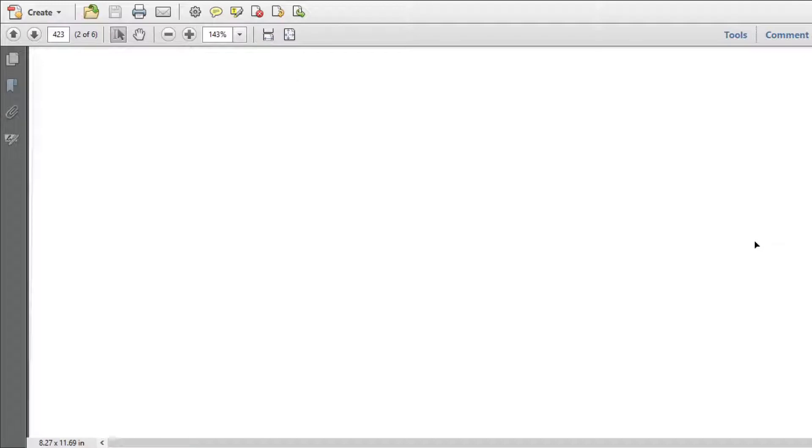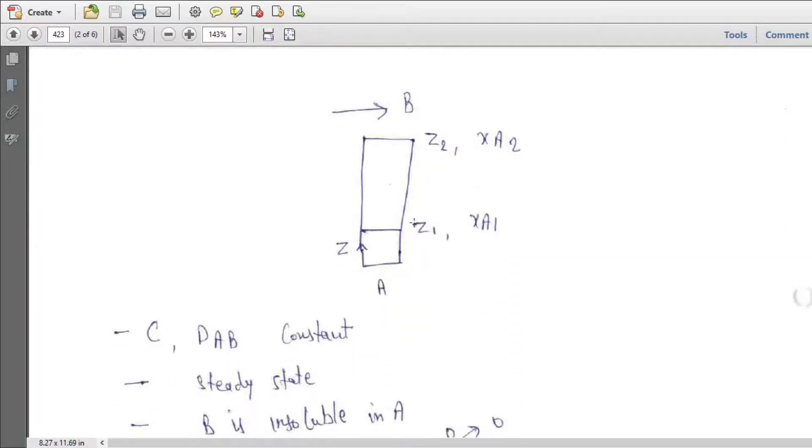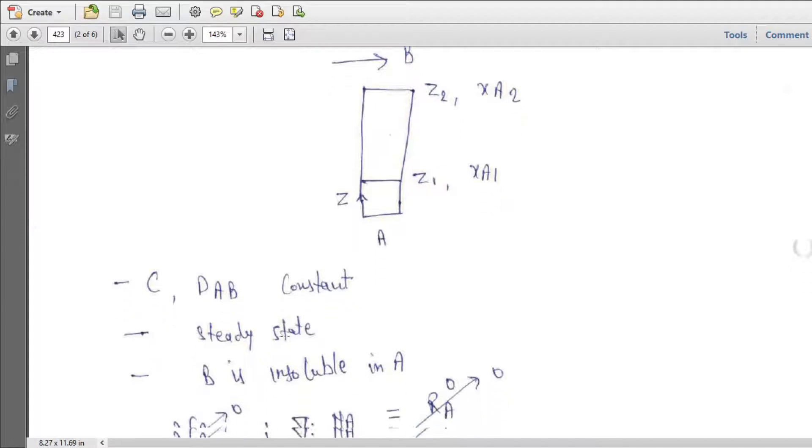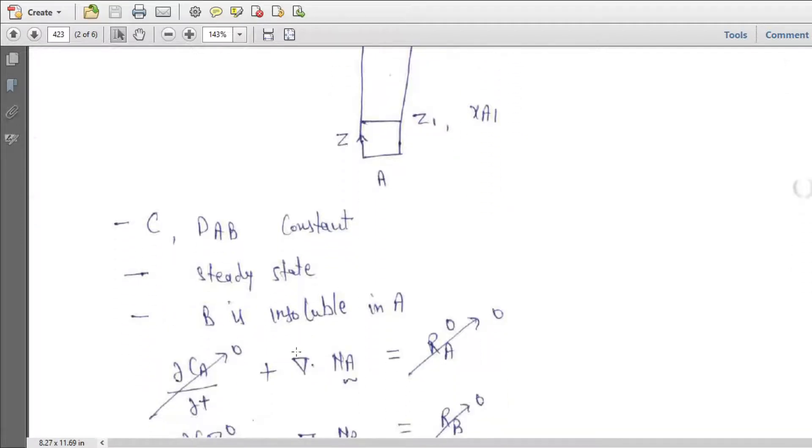So it is something like that. B is a liquid film, here is A. So A is diffusing into B in Z direction. Here the total concentrations and DAB are constant. Steady state operation, B is insoluble in A.